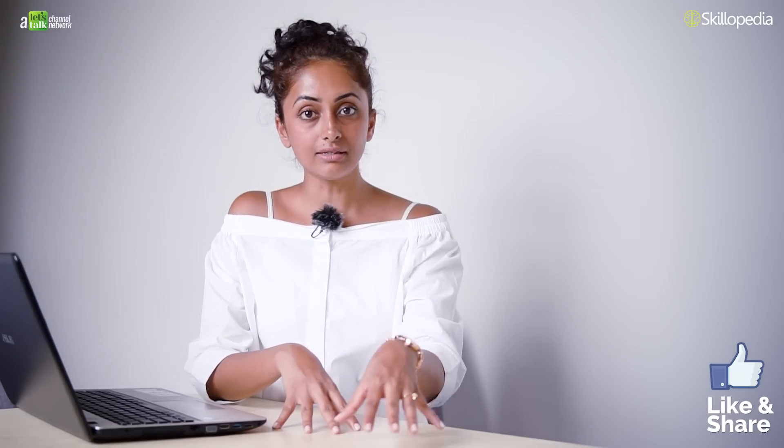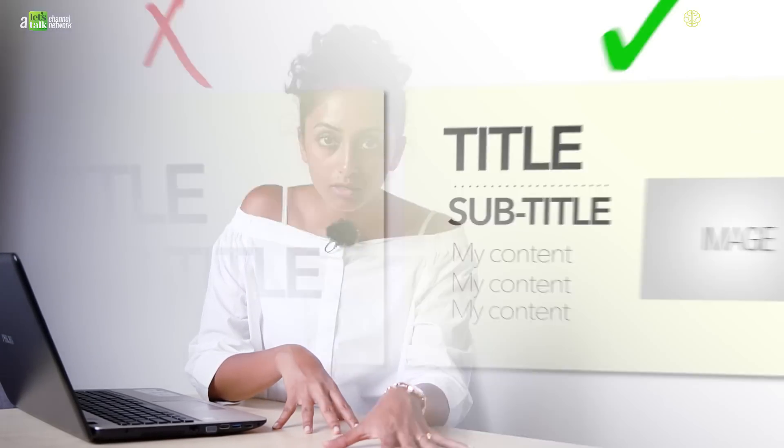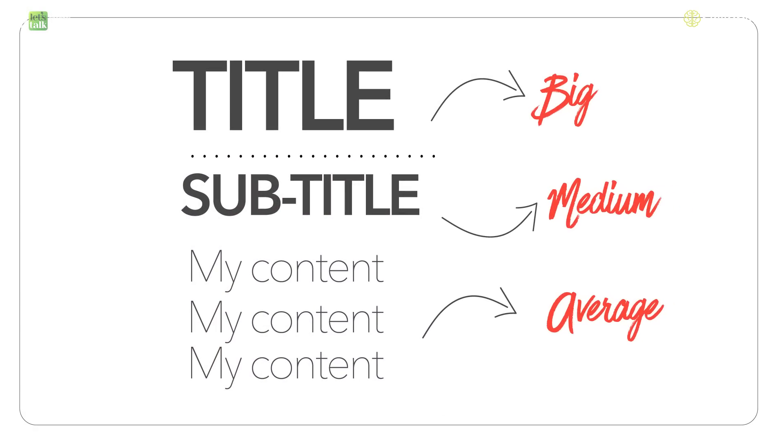Now let's talk about the size of the font. Your titles and subtitles should not be too big or too small — the key is that they must be readable for the person sitting in the last row. The title should be large enough, while the bullet points can be smaller since you'll explain them verbally. Keep your font size hierarchy simple and clean without going too extreme.